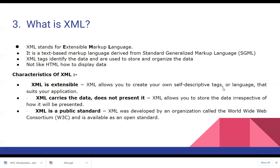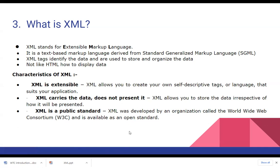The characteristics of XML are: first, XML is extensible — it allows you to describe your own tags. Second, XML carries the data but does not present it — it is used to carry data from one platform to another. Third, it is a public standard developed by W3C (World Wide Web Consortium) and is available as an open standard for anyone to use.